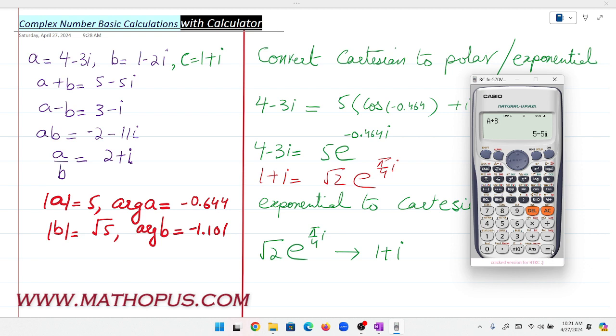Equals 5-5i—this is addition of two complex numbers. Similarly, for subtraction: A minus Alpha B. The subtraction result is 3-i.